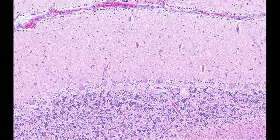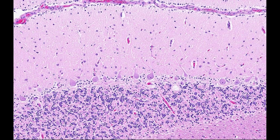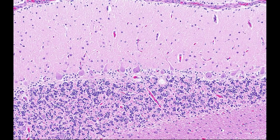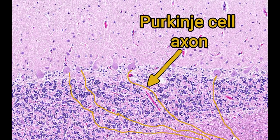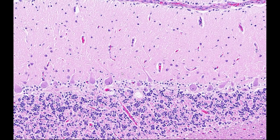Purkinje cells are effectively the output cells of the cerebellum. They process the information from the granular cells to affect a single output which returns via the Purkinje cell axon through the granular layer, through the white matter and down to the cerebellum nuclei. The huge dendritic tree of a Purkinje cell means that they receive input from a large number of other cells, the sum of which results in either stimulation or inhibition of an action potential. Purkinje cells themselves are inhibitory on their target neurons.